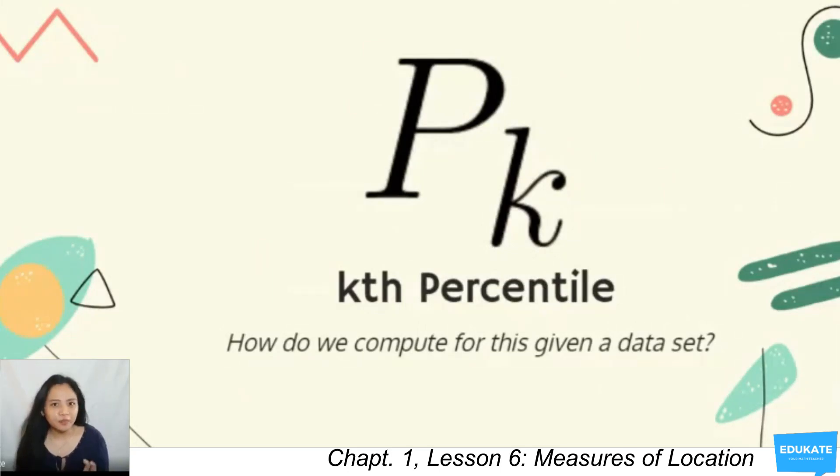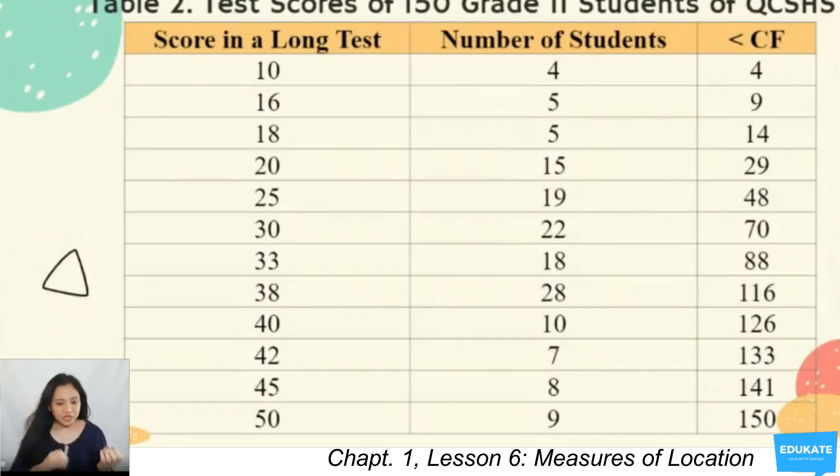Given the PK or the Kth percentile, how do we compute for this given the dataset? Let's say you have this table. These are the test scores of 150 grade 11 students of Quezon City Science High School. This means that there are 4 students who scored 10, 5 students who scored 16, 5 students who scored 18, and so on. We can also see that the total or the last computed cumulative frequency is 150, which is also the same as our total number of observations.